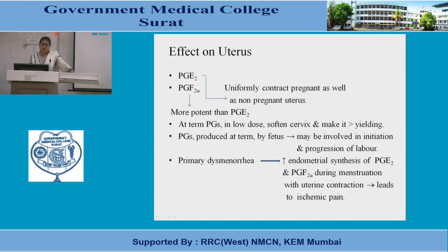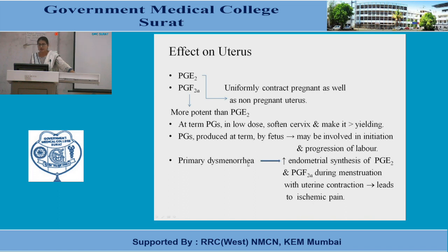Effect of prostaglandins on the uterus: PGE2 and PGF2-alpha both uniformly act on the uterus — pregnant and non-pregnant — to cause contraction, with PGF2-alpha being more potent than PGE2. In low doses, prostaglandins soften the cervix and make it more yielding. Prostaglandins may be produced at the time of birth and may be involved in the initiation and progression of labor. In primary dysmenorrhea, there is increased endometrial synthesis of PGE2 and PGF2-alpha.